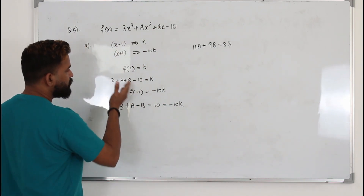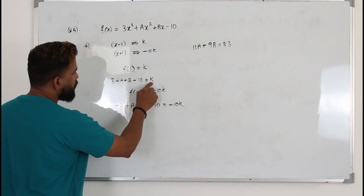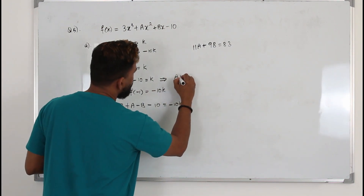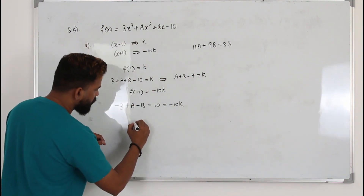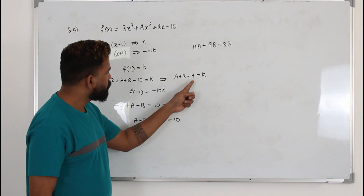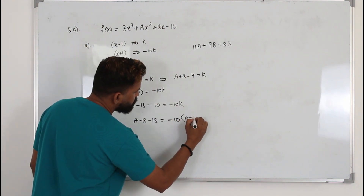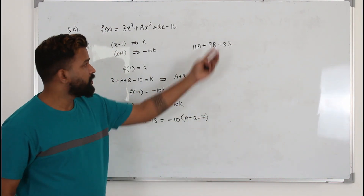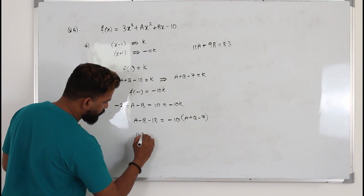Now you need to combine these two equations by finding a way to eliminate k. Rewriting the first equation: 3 - 10 = -7, so a + b - 7 = k. The second equation gives a - b - 13 = -10k. Substitute the expression for k from the first equation into the second equation and simplify, putting everything on one side. You get 11a with the terms combining.